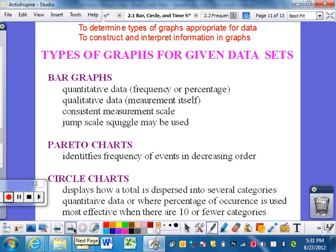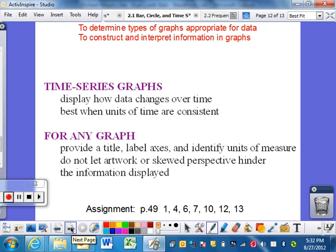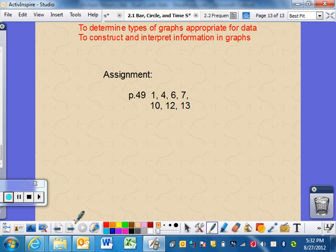And these are just a summary. If you want to have it in a nice little order, you can look at these. I'm not going to go through them and waste any more of your time. So bar graphs, Pareto charts, circle charts or circle pie graphs, time series graphs. And once again, the important part, for any graph, provide a title. Label everything, identify the measure. And do not let the artwork skew or hinder. There's a point where you're too artistic. You're taking away from the actual data as well. And we're going to kind of talk about this as we get into our project. So this is the assignment we're going to do tomorrow in class. You guys have a wonderful night.